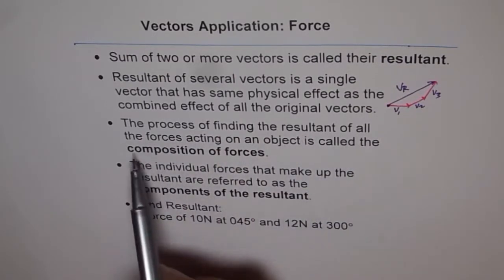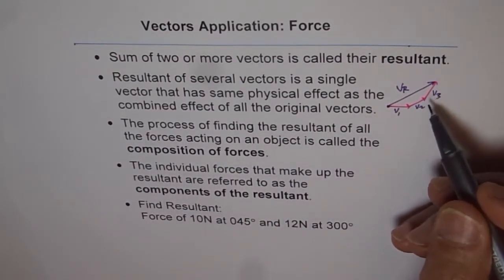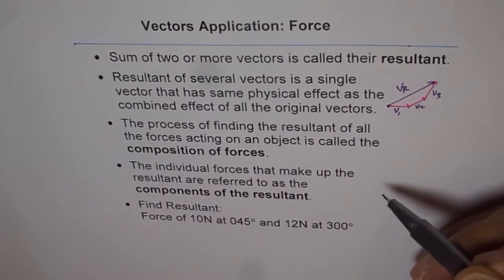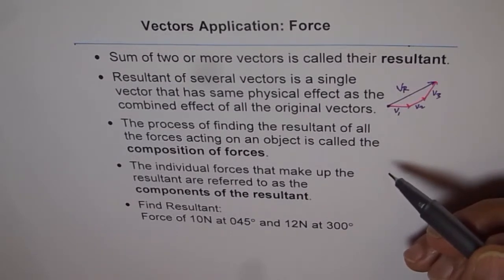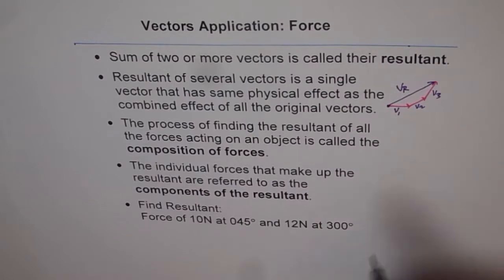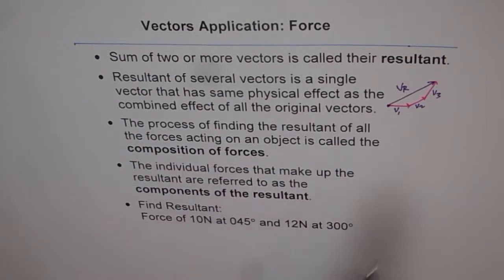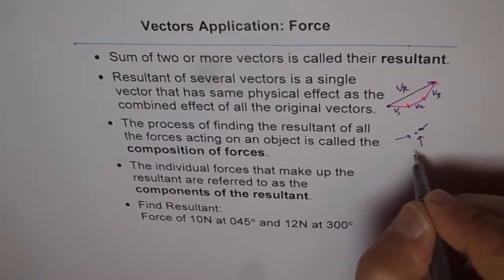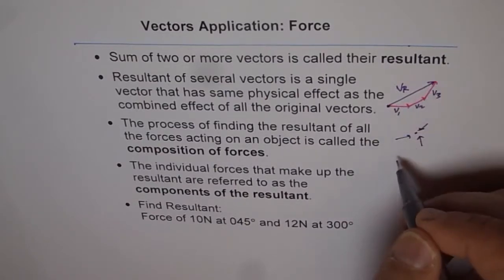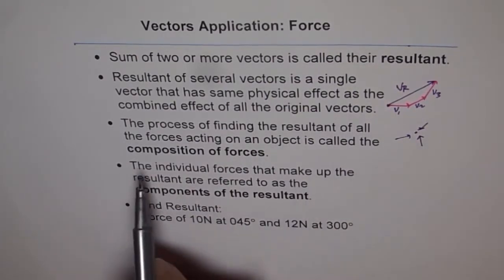The process of finding the resultant of all the forces acting on an object is called the composition of forces. Force is a vector, so we are taking our knowledge of vectors and applying it to forces. If there is an object with many forces acting on it at any given instance of time, we can find a resultant force, and that process — combining all of them into one — is called composition of forces.